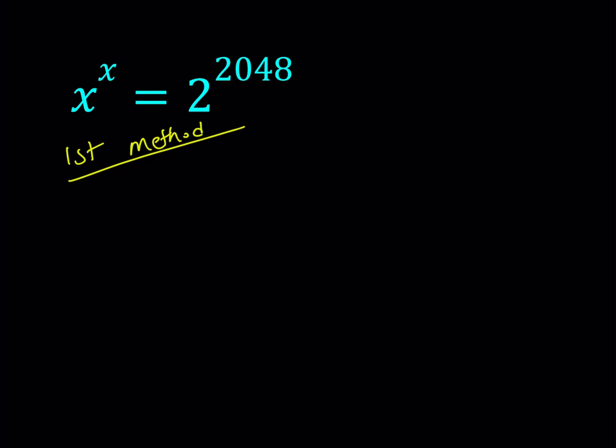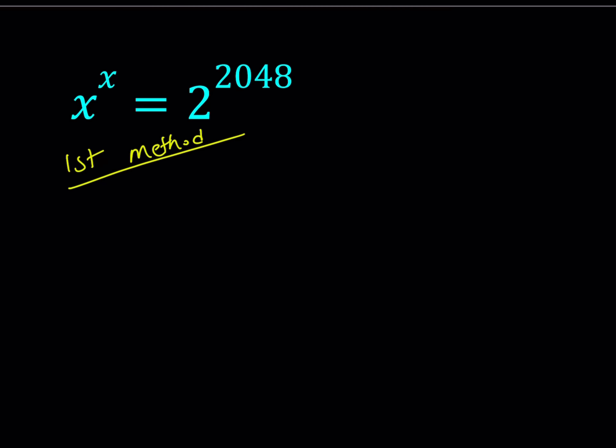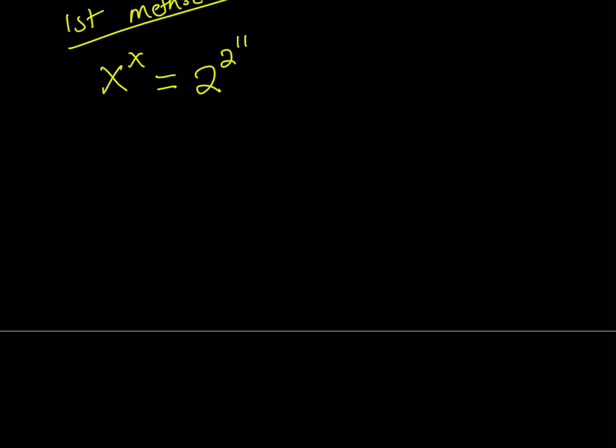The first method basically involves breaking down the exponent. Let's go ahead and write the 2048. If you know that 2 to the 10th power is 1024, that will help you figure out 2048, which is 2 to the power 11. So I can write this as 2 to the power 2 to the power 11. Now I'm going to break down the 2 to the power 11 into two meaningful pieces. For example, I can do the following: x to the power x equals 2 to the power 2 times 2 to the 10th and then write this as 2 to the second to the power 2 to the 10th.